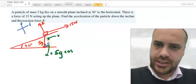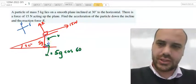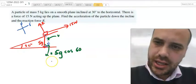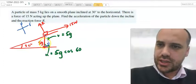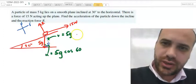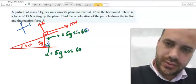Now, that angle there is 60 degrees. So, 5g cos 60 and v, this one here, is going to be equal to 5g sine of that angle right there, sine 60.